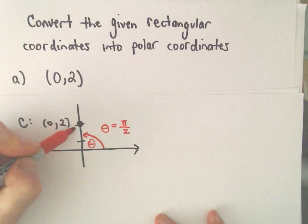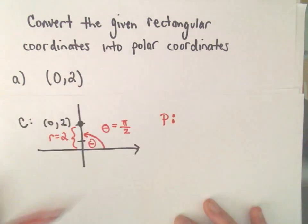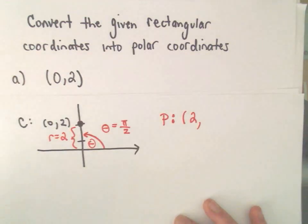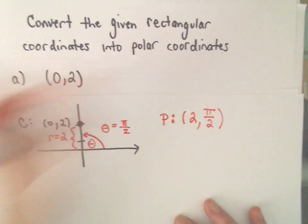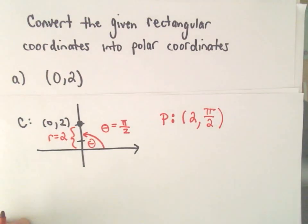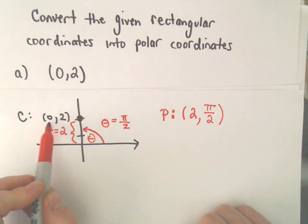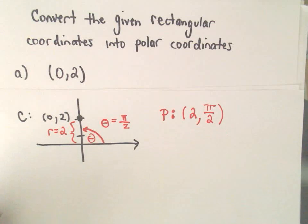And if you think about that distance you've gone out from the origin, we're two units away, so our r value would also just equal 2. So the polar form of that point, we list the r value first. So it says we've gone two units out from the origin at an angle of pi over 2. So in polar coordinates, the Cartesian point represented by (0, 2) in polar form would be (2, pi over 2).